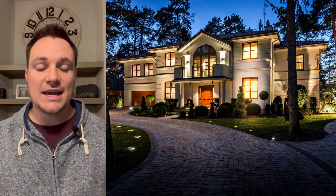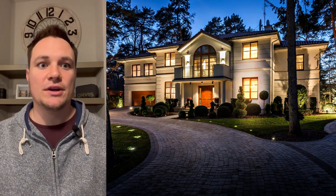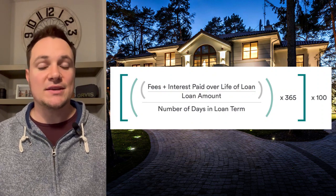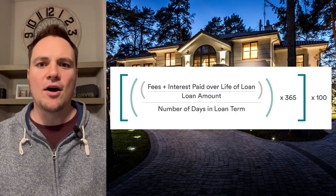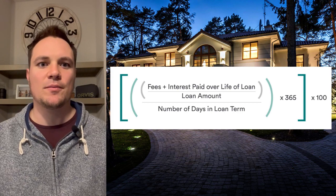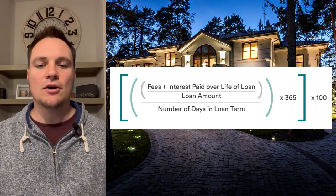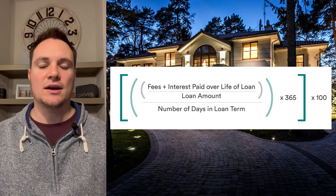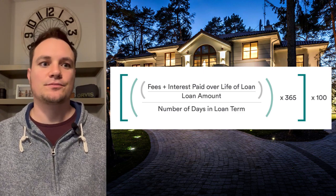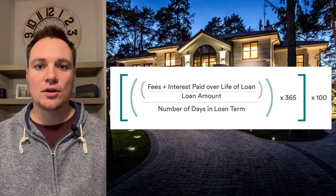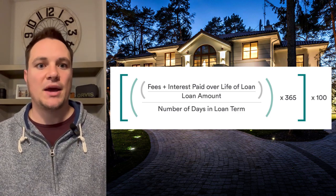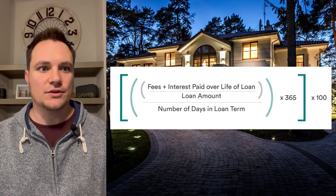To get the APR on a traditional 30-year loan, they basically spread out the closing costs into a monthly figure as if they were paid back evenly over 360 months instead of paid out on closing day. The APR would then be the resulting rate if those fees were instead converted into interest.